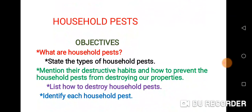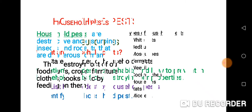What are the objectives? At the end of the class, you should be able to explain what household pests are, state the types of household pests, mention their destructive habits, and how to prevent household pests from destroying our properties. You should also be able to list how to destroy household pests and identify each household pest. Let's get started.